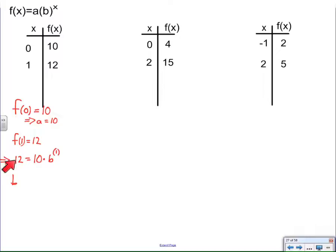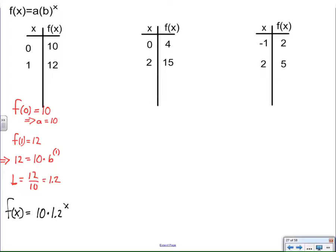When y is 12 and x is 1, we just divide both sides by 10 and get 1.2. Therefore b is 1.2, which is what I was able to get from intuition in the first place — a 20% growth rate, a 120% growth factor.